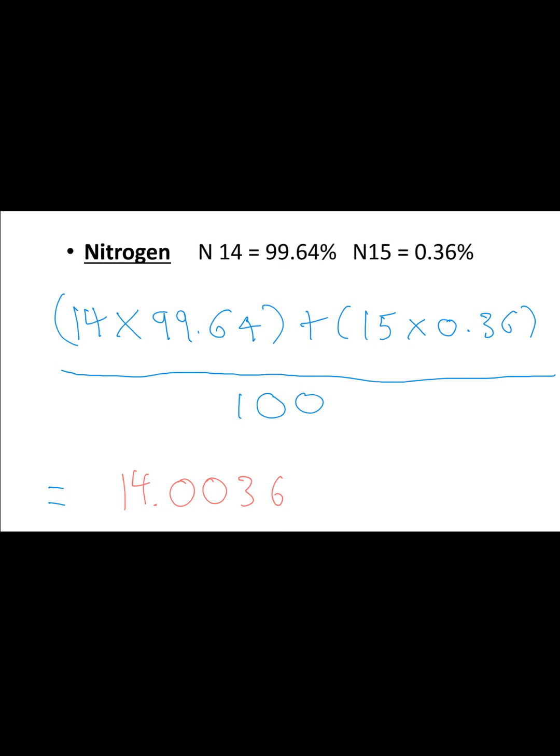Okay, so here's the answer. Even though the question gives percentages, you can still think of it as a number of particles. You've got 99.64 particles of nitrogen-14, so you do 14 times 99.64. Then do the same for nitrogen-15: 15 times 0.36. Divide the whole thing by 100, and your final answer should be 14.0036 as the relative atomic mass of nitrogen.